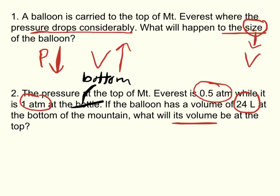Remember, always annotate, circle your givens, underline your unknown. Since we're dealing with atm, that's pressure, and liters, that's volume, we're going to use the relationship P1V1 equals P2V2.